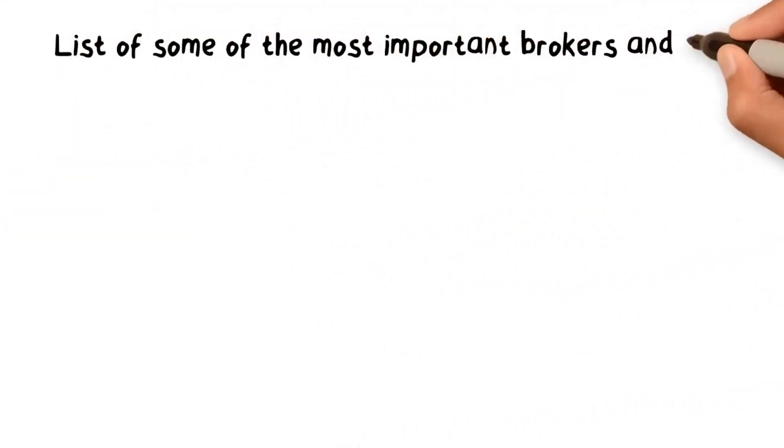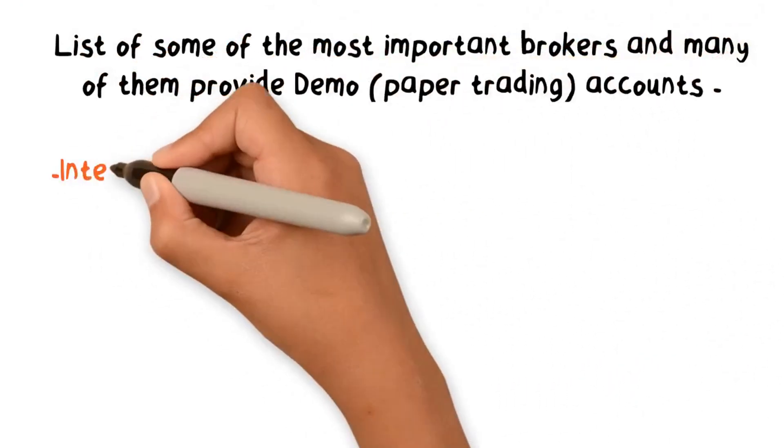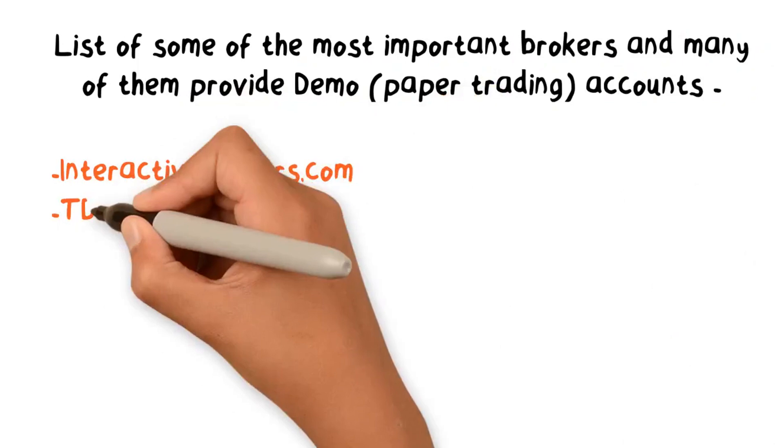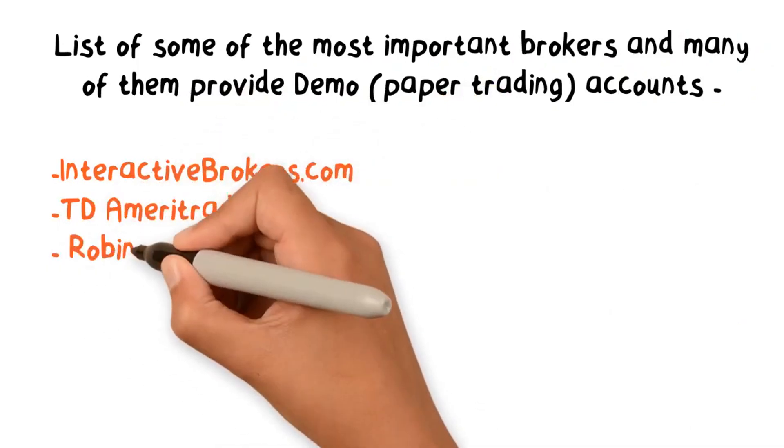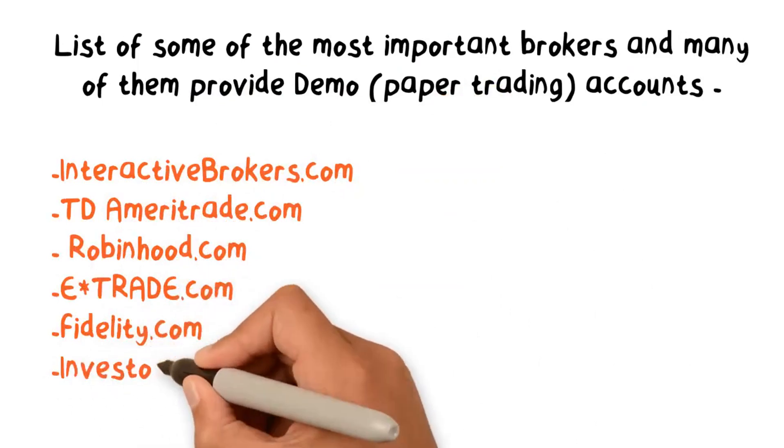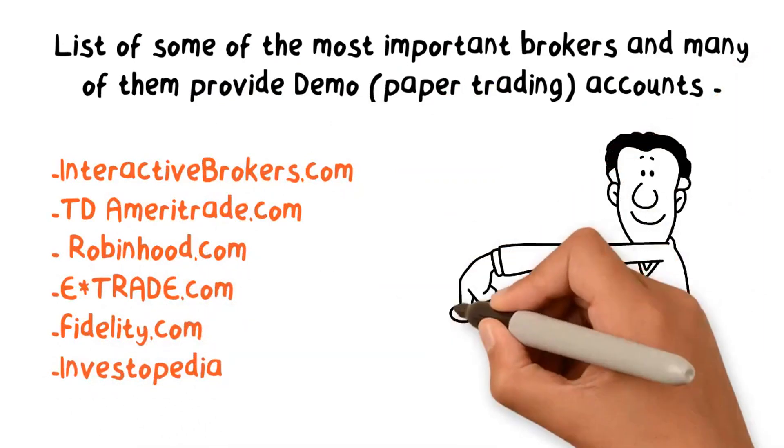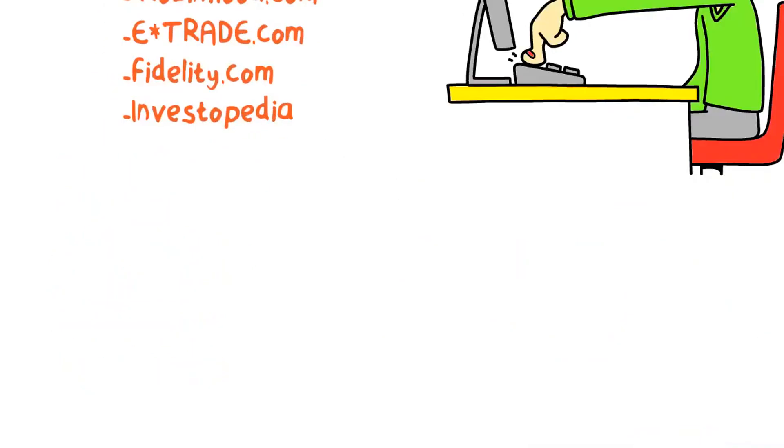Okay, this is the list of some of the most important brokers, and many of them provide demo paper trading accounts: InteractiveBrokers.com, TDAmeritrade.com, Robinhood.com, E-Trade.com, Fidelity.com, and Investopedia, which is an educational website that provides a simulator for long-term investors.